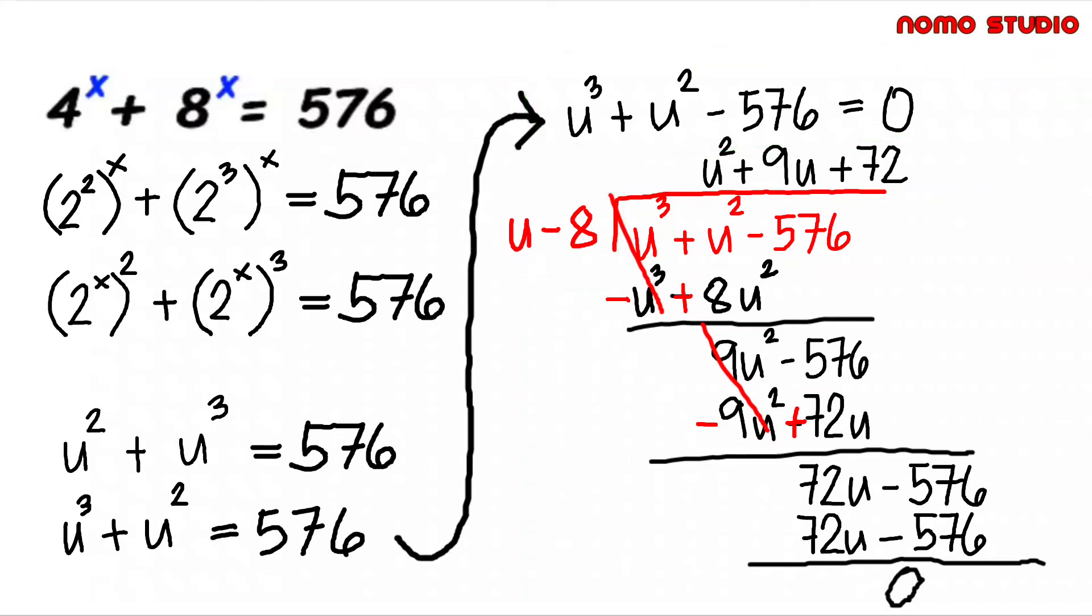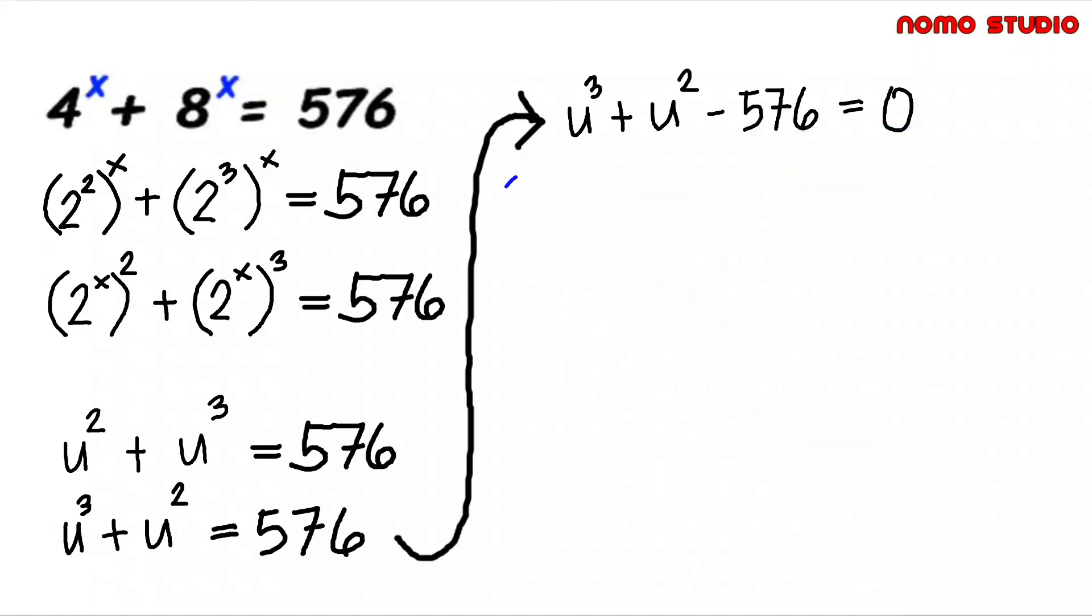So the factors are u minus 8 and u squared plus 9u plus 72. We will use one of these two factors to get the value of x here. Let's try to use this. So let's equate this to 0.